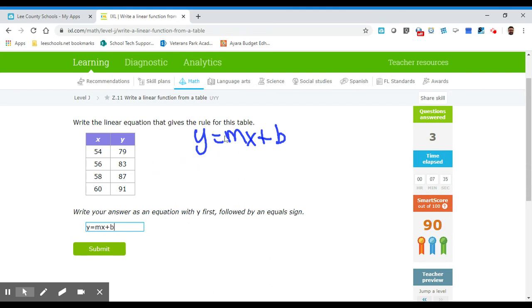All right, so let's find the m, which is our slope. So m is our slope. So let's start with 91 minus 87 is just 4, over, and then 60 minus 58 is 2. And 4 divided by 2 is the same thing as 2. So our slope is 2. So let's go ahead and get rid of our m and we're going to put 2 there. We're going to write 2x.